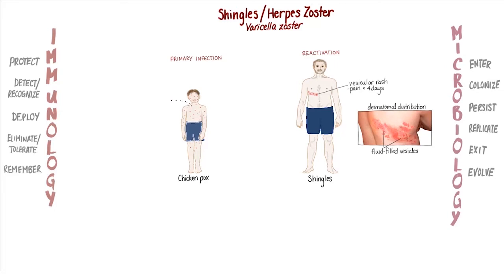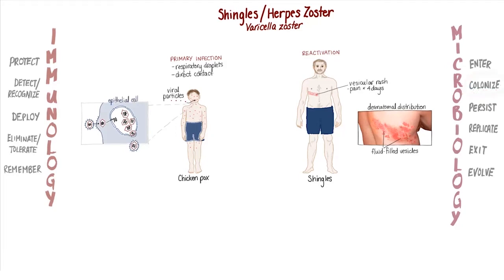As a child, Noah had breathed in some viral particles containing varicella. Inhaled respiratory droplets are the most common means of entry into the body for varicella virus, but children can also become infected by direct contact with the secretions from the rash of an infected person. The inhaled virus colonizes the epithelial cells of the upper respiratory tract, where it replicates for several days before spreading to the tissues of the tonsils and other local lymphoid tissues.